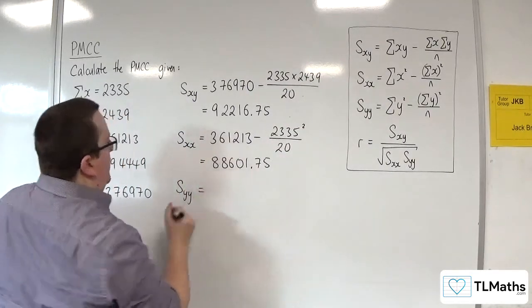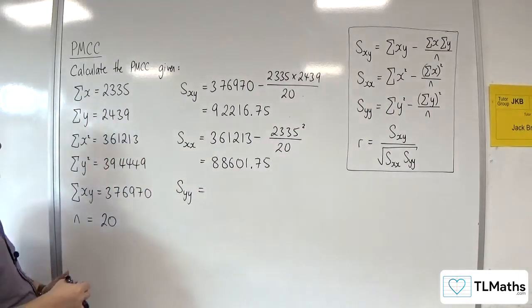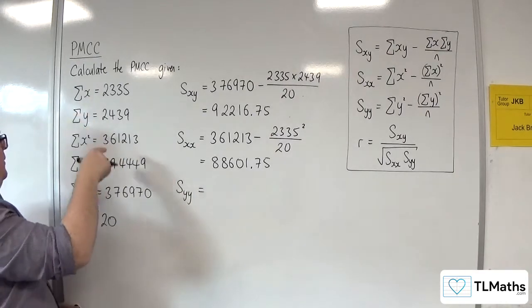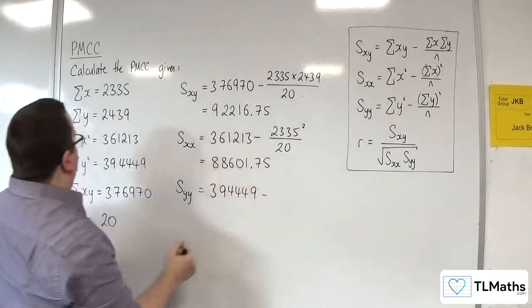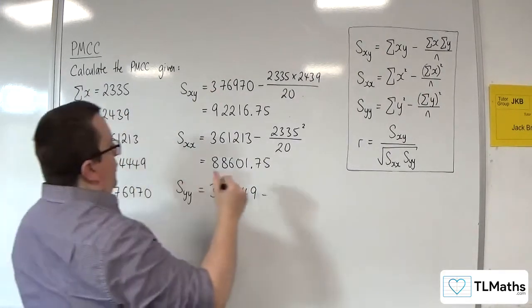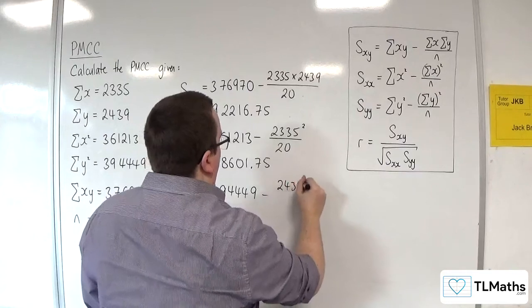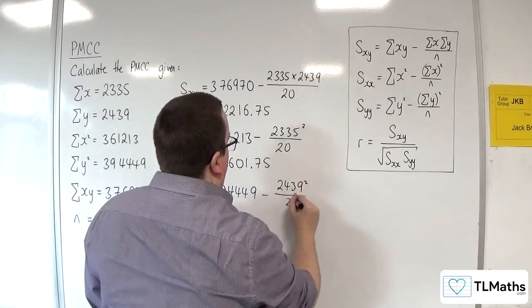Okay, then we've got S_YY. Okay, so we've got the sum of Y squared, 394449. Take away the sum of Y, 2439 squared over N.